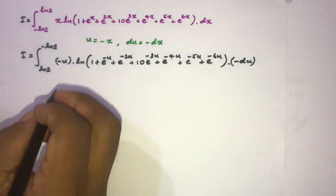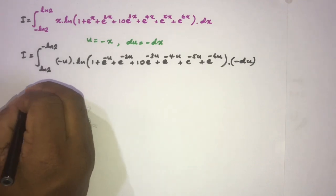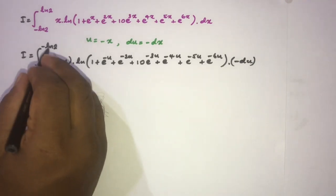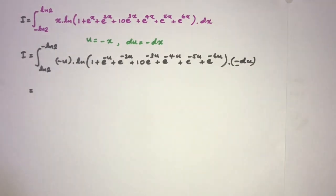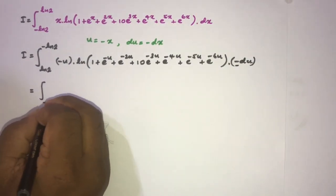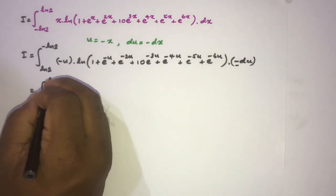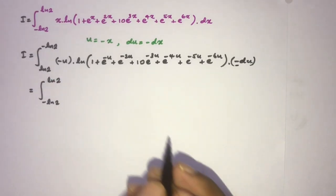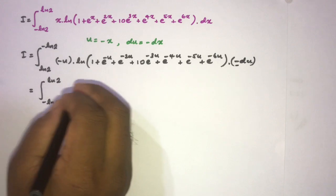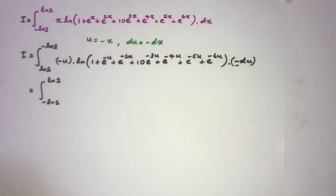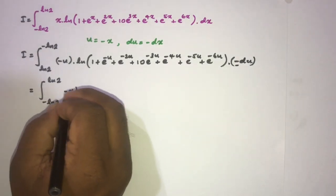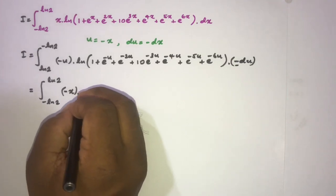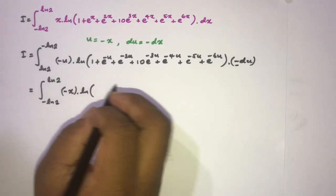Now we change the variable. When we swap the limits, the minus signs cancel, so the limits remain from minus natural log of 2 to natural log of 2. Since a definite integral is independent of the variable name, we replace u back with x, giving minus x times the natural log of...